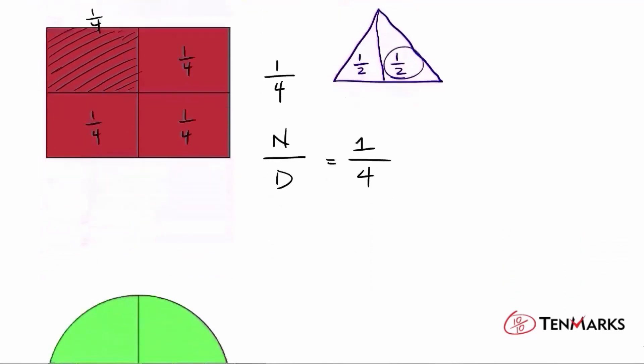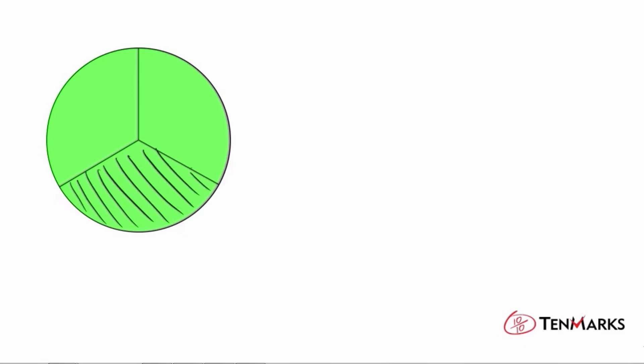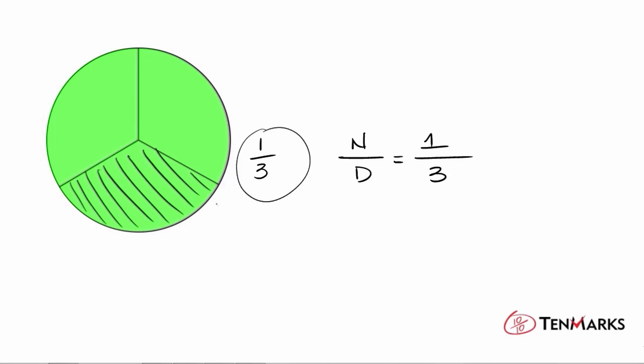Here you have a circle — the circle represents one whole. The whole has been divided into three equal sections. So if I shade in this section here at the bottom, and I want to find out what fraction of the circle this is — one section is shaded and there are three total sections, so the shaded section is one-third of the entire circle. Numerator over denominator: the numerator tells you how many parts are shaded, which is one, and the total number of parts is three. So again, this is a unit fraction representing the fraction of this circle.